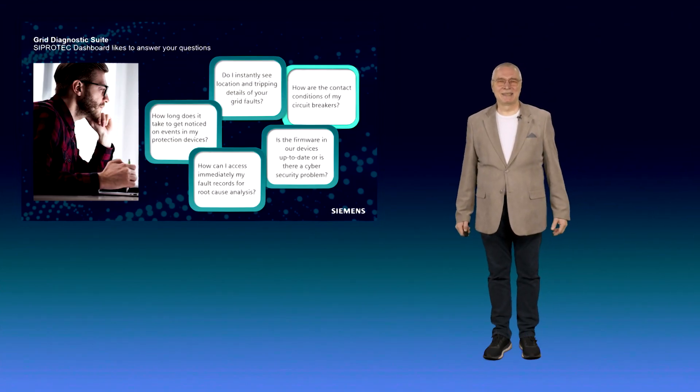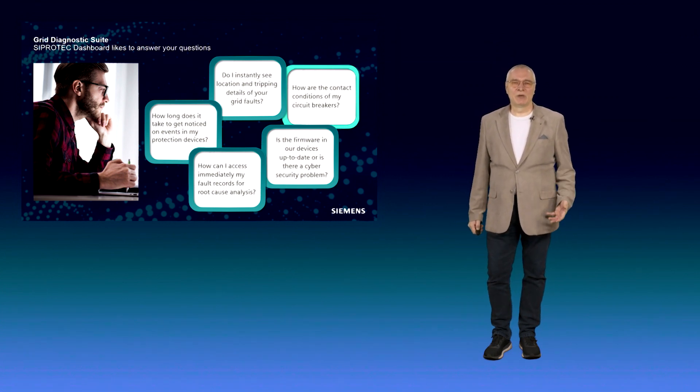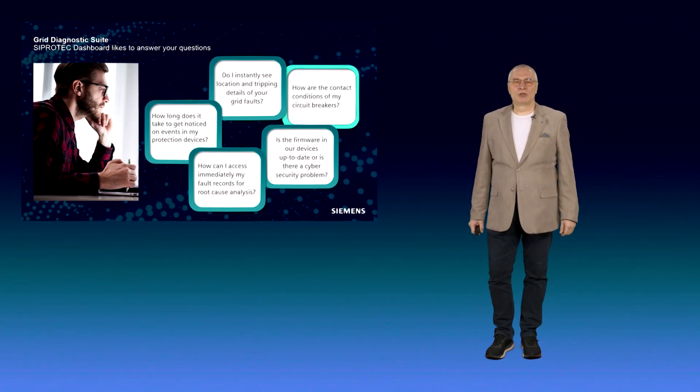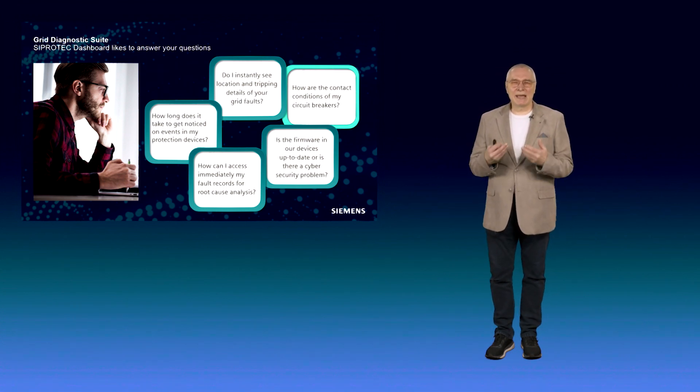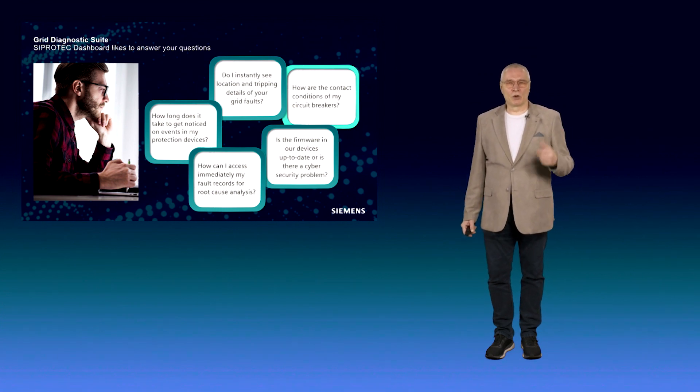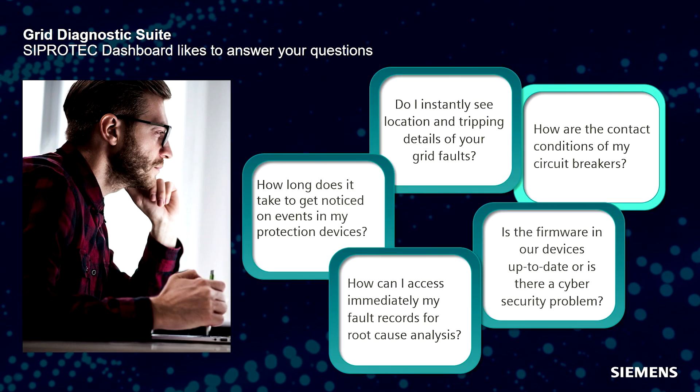Because of the feedback by our customers, we learned that there are typical questions protection engineers are confronted with. How can the C-Protect Dashboard assist you on those tasks, working with protection relays in medium and high voltage substations? We summarized some important questions from potential user perspectives. For example, how long does it take to get informed about events happening in my protection relays? How can I access my fault records immediately to do further root cause analysis to avoid similar problems in the future? Or how actually are the contact conditions of my circuit breakers, which is quite important for maintenance planning or to estimate remaining lifetime? Or are my devices running on the latest firmware version, or could cloud cybersecurity issues become a risk?